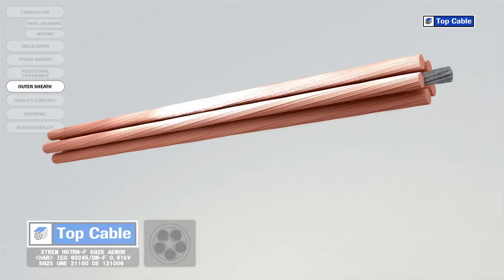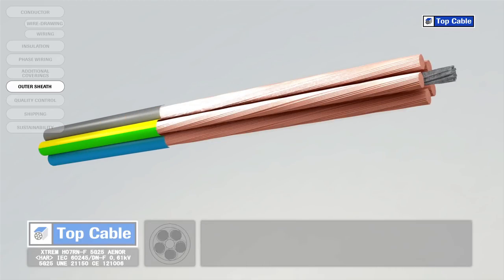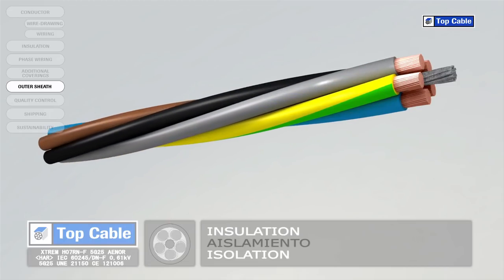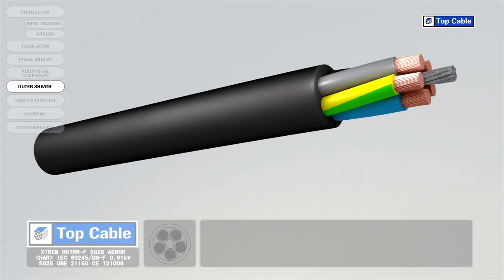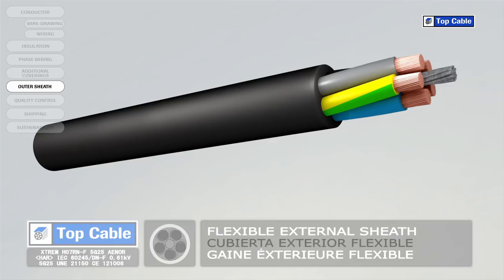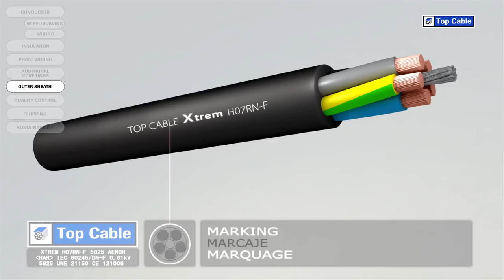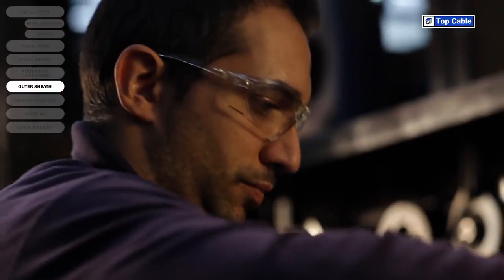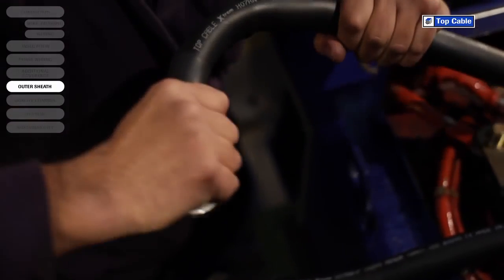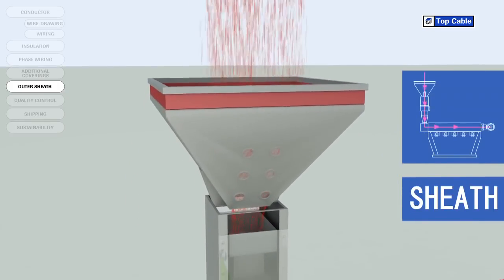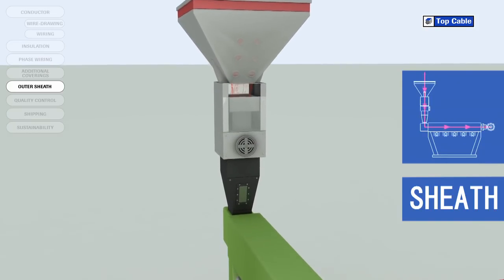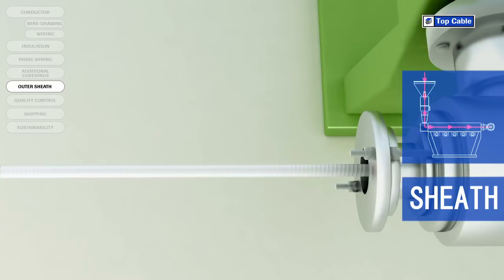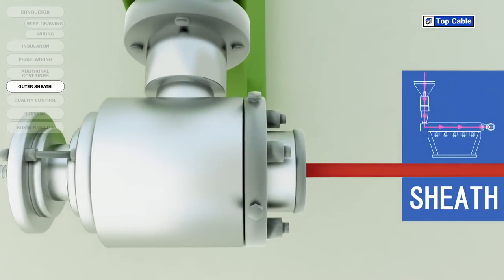Cables usually have an outer polymer covering for protection, called the outer sheath. The sheath protects the conductors and their insulation from external elements which may change their electrical properties, such as moisture. It also protects them from mechanical aggression which may occur during the installation of the cable. As with the insulation, the outer sheath can be made from a thermoplastic or a thermosetting plastic, and is applied via a process of extrusion at high temperature. The sheath may be made from different materials depending on the required protection level, the final flexibility of the cable, and the work environment.